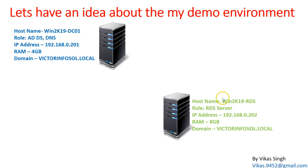The second server is our RDS server, where we are going to install and configure Windows Server Backup. We are going to restore the backup on a brand new machine and see how we can restore this backup on a bare metal machine. This is win2k19rds with IP address 192.168.0.202, joined to my domain.